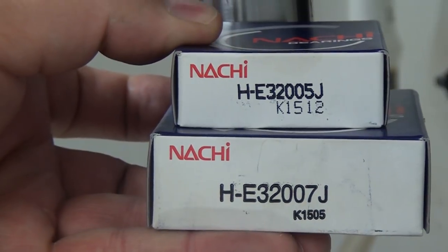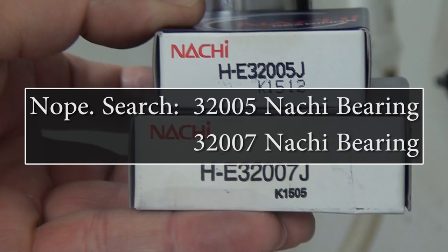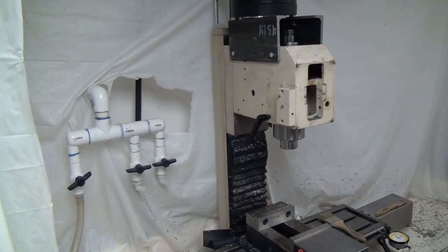So these are those bearings. Pause right here and write down those part numbers. I believe you search with the K1512 and the K1505 part numbers. I got these on Amazon. I want to say it was around $60 shipped.